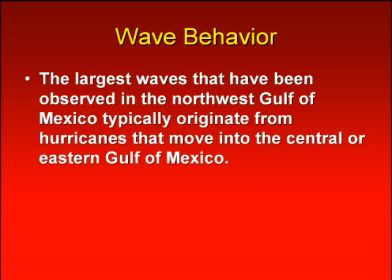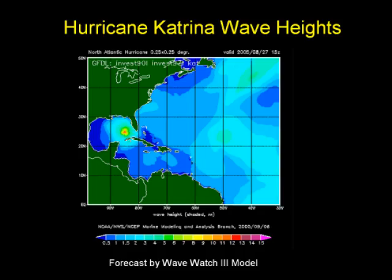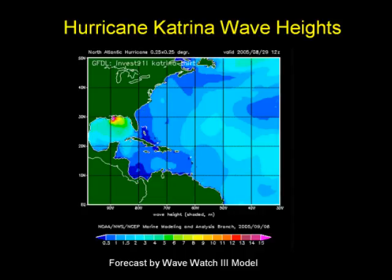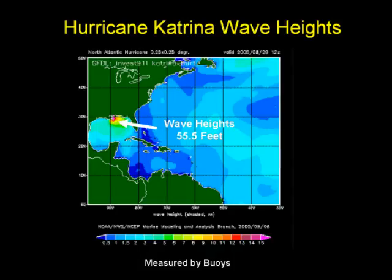The largest waves observed along the Texas coast typically originate from hurricanes that move into the central or eastern Gulf of Mexico. This NOAA wave watch model simulation depicts the waves from Hurricane Katrina. The right front quadrant of the hurricane produced wave heights in excess of 50 feet according to the model, and 10 to 13 feet in the northwest Gulf of Mexico, which was slightly underestimated. Observed values from buoys indicated waves reached 55.5 feet in the northeast quadrant of Hurricane Katrina, and 13 to 19 feet in the northwest Gulf of Mexico.